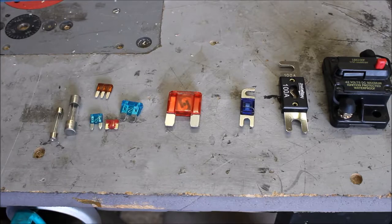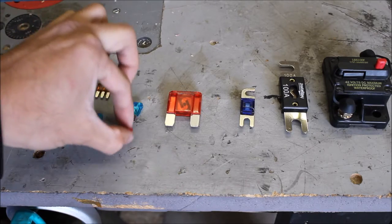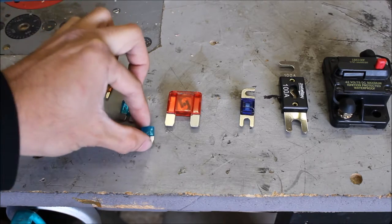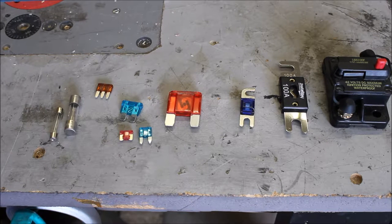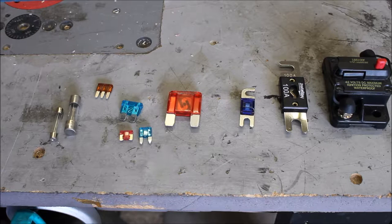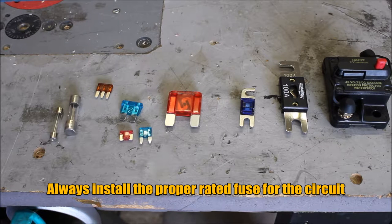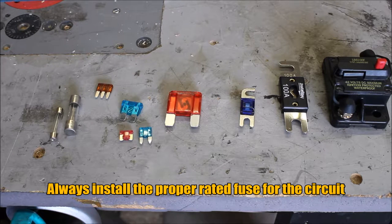And always put in the proper amperage. It is not safe practice if you've blown a 10-amp fuse to place in a 15 or a 20-amp fuse, because now that fuse can't do its job. That circuit's rated for 10 amps. They put a 10-amp fuse in there for a reason. You put a higher rated fuse in, it will not actually blow if there's a short. You could cause a fire.